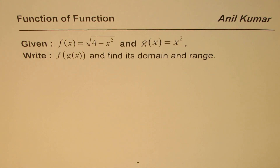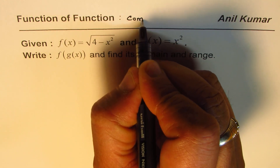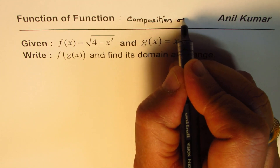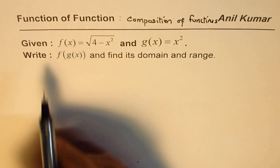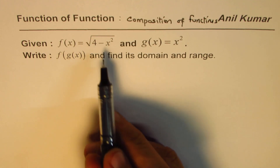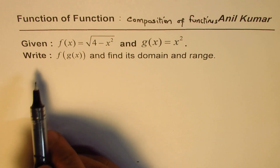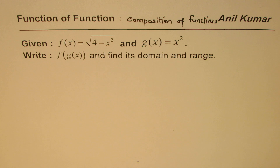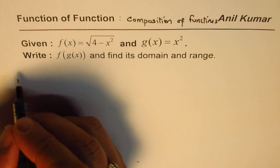I'm Anil Kumar and here is a very interesting question on composition of functions — function of function. The question is: you are given f(x) equals square root of 4 minus x squared, and g(x) equals x squared. Write f(g(x)) and find its domain and range.